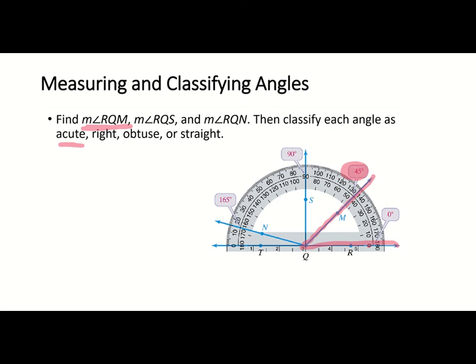Next, let's find the measure of angle RQS. Here is R, Q, and S — this whole angle starts at zero on the right and goes up to 90 degrees. Since it's exactly 90 degrees, that's going to make it a right angle.